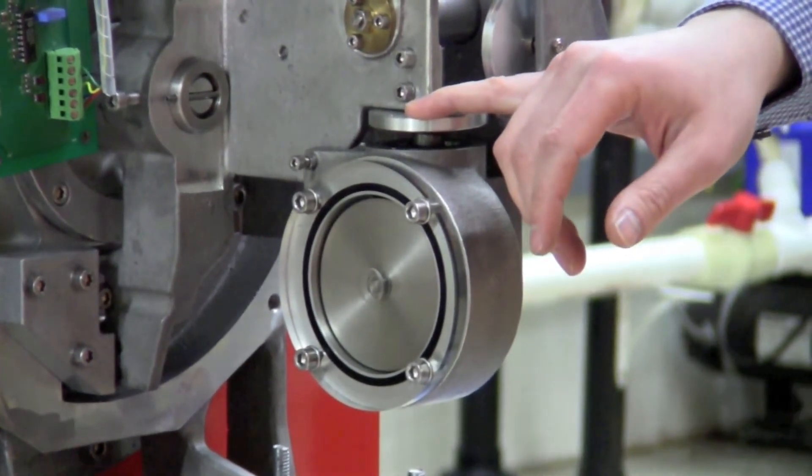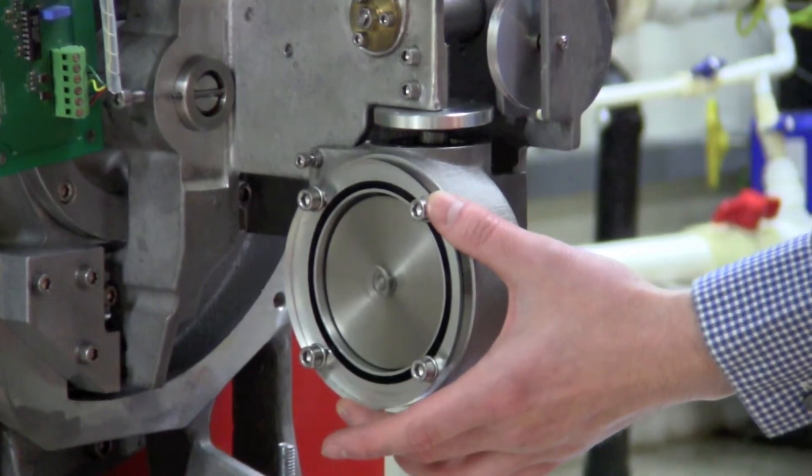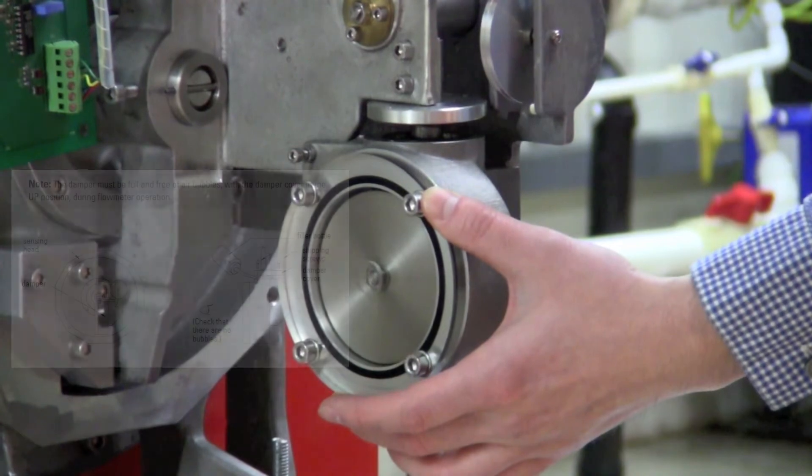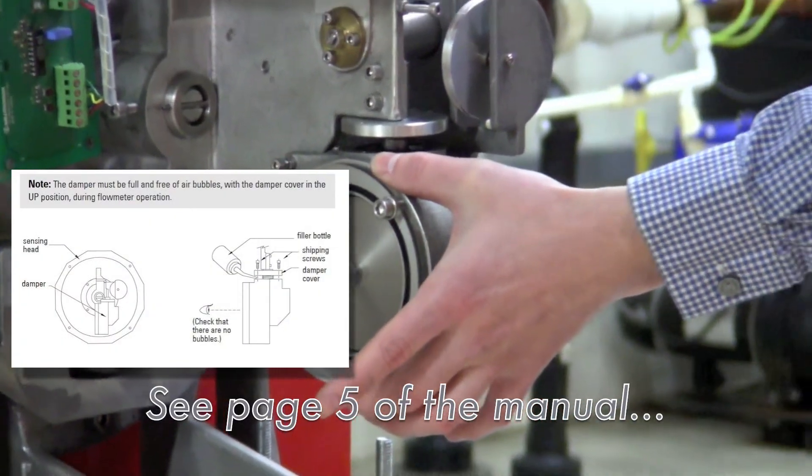Once the shipping screws have been removed, you have to take a look at the dampening bowl itself to confirm that it is full of dampening fluid. If it is not full of fluid, you will need to fill the bowl until there are no air bubbles shown.